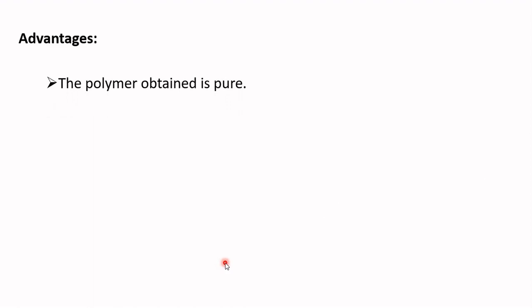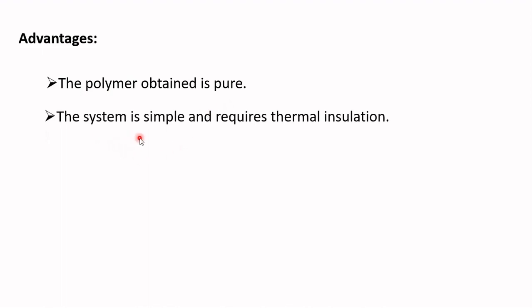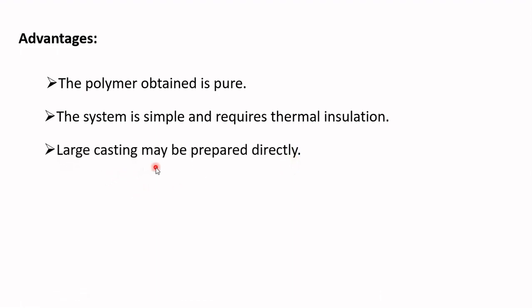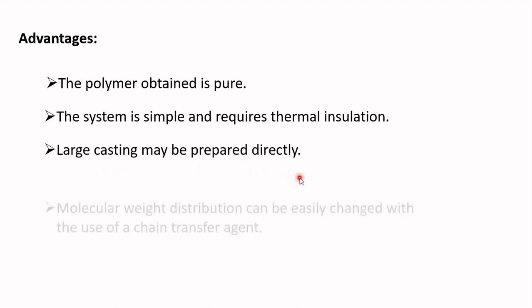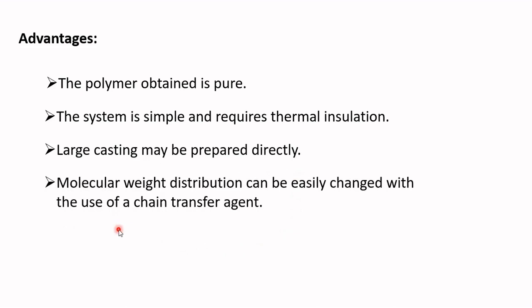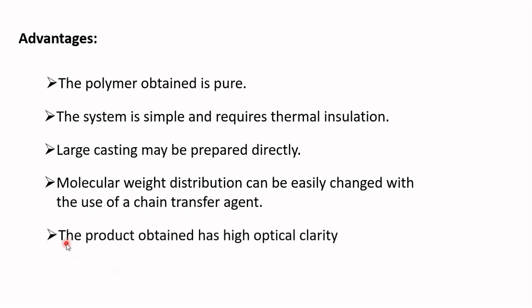The advantages of bulk polymerization include: the polymer obtained is pure; the system is simple and requires only thermal insulation; large castings may be prepared directly; the molecular weight distribution can be easily changed with the use of chain transfer agents; and the product has high optical clarity.